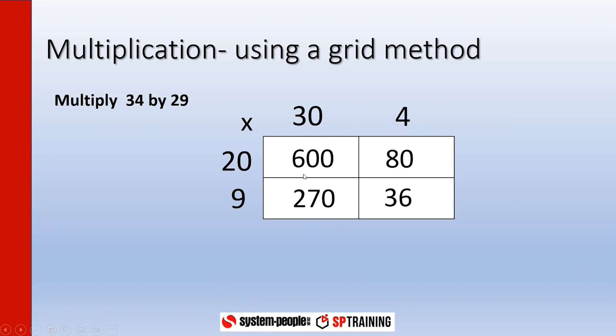Now we've got these numbers in here, we are just going to add them all together by a column method. So we'll do nothing, nothing, nothing, and 6 is 6. 7 and 8 is 15 and 3 more makes 18, so I've got 8 in the tens column carrying 1 over into the hundreds column. Don't forget to add this in: I got 1 and 6 and 2 which makes 9. So my answer is the same as with the other method: 986.